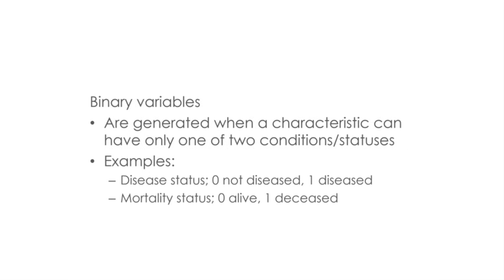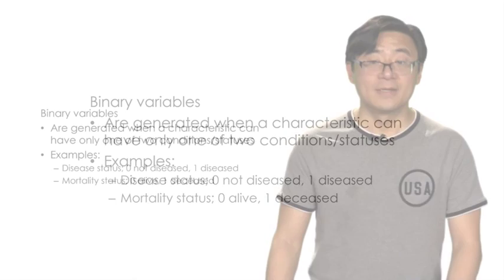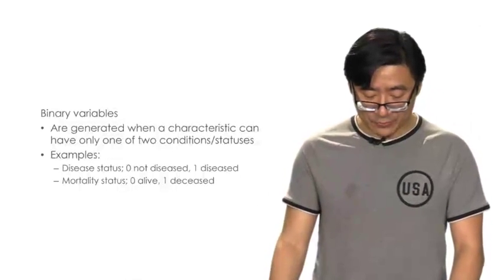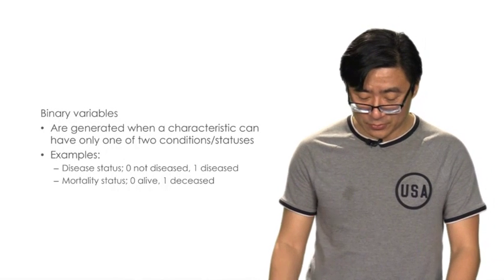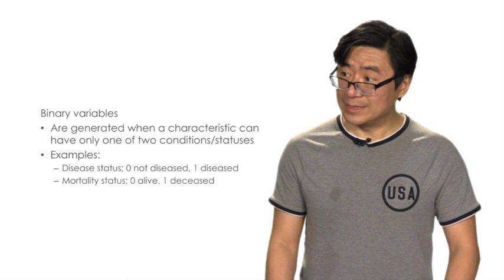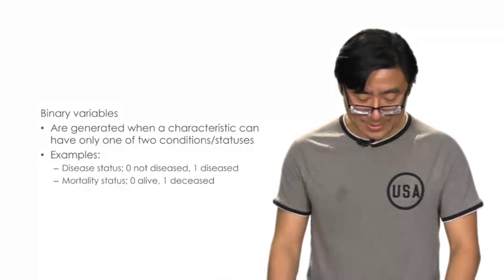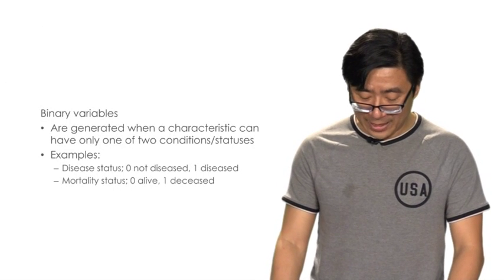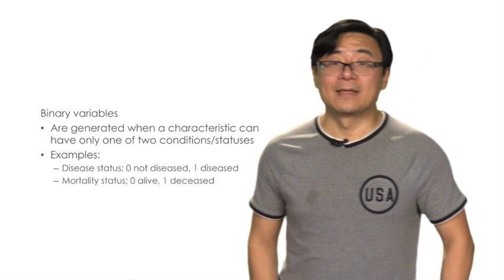Binary variables are generated when a characteristic can have only one of two conditions or statuses. Examples include disease status — using zero to represent not diseased and one to denote diseased — and mortality status, with zero for alive and one for deceased.